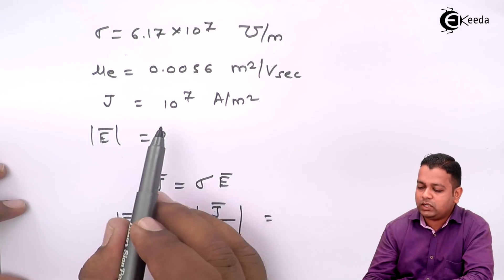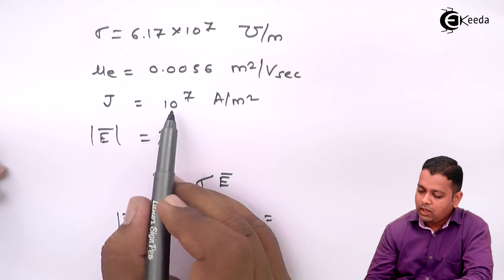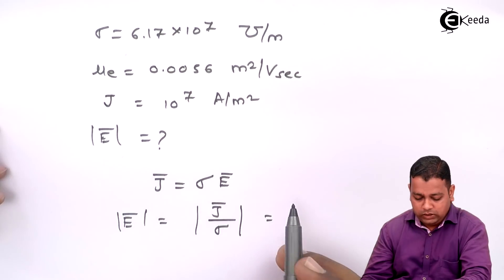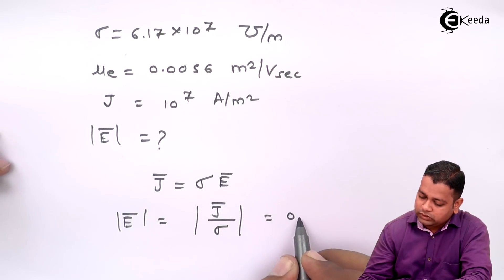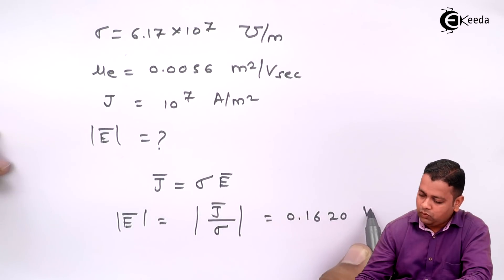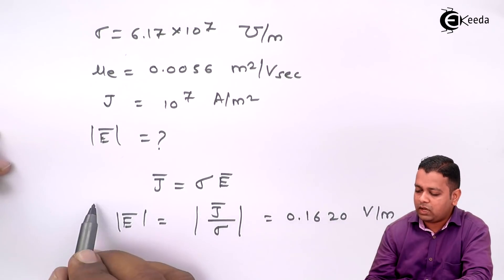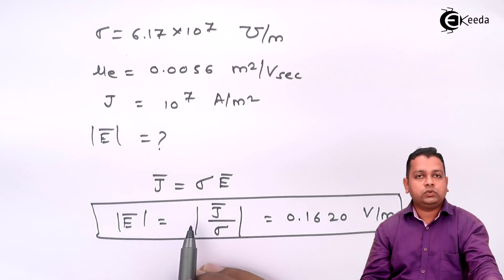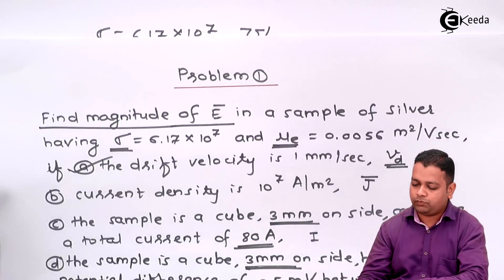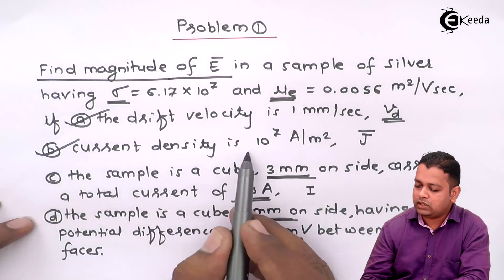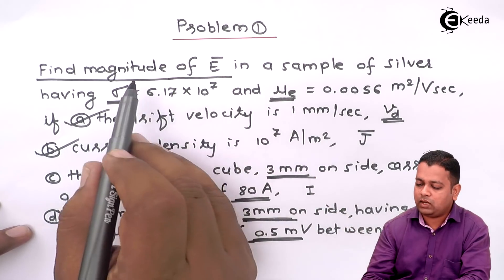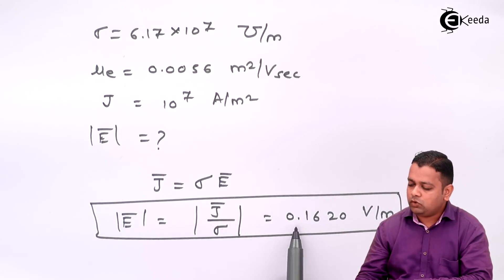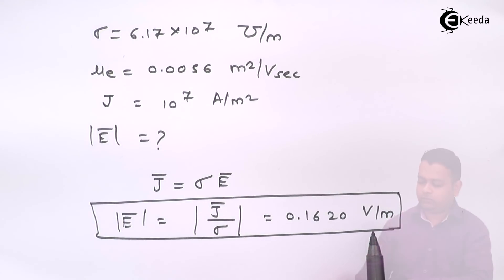Putting in the values, |E-bar| = 10⁷ / (6.17 × 10⁷) = 0.1620 volts per meter. This is the required answer for part B. We were provided the current density and the two material constants, and we found the magnitude of E-bar to be 0.1620 volts per meter.